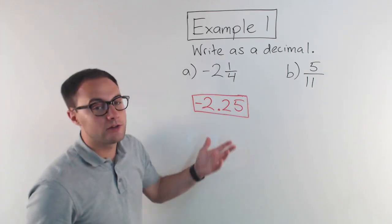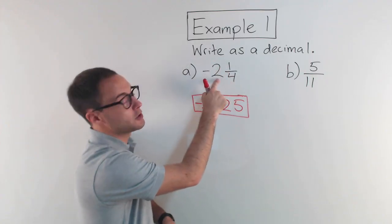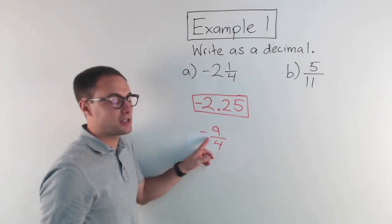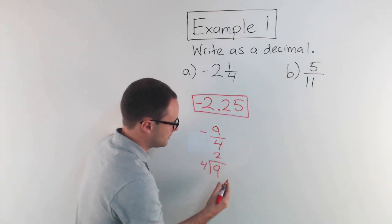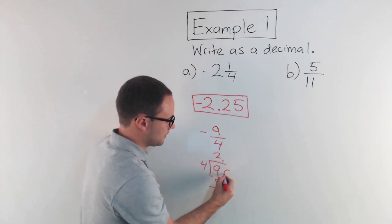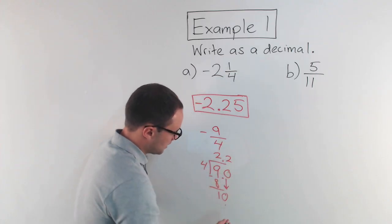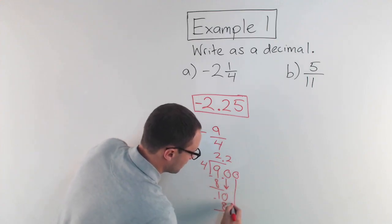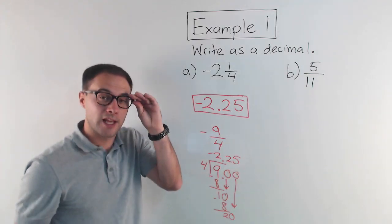Another way to do it: convert to an improper fraction. Four times two is eight, plus one is nine — negative nine over four. This just means division, so nine divided by four. Four goes into nine twice — that's eight, subtract, get one. Add a decimal point and a zero: four into ten is two, that's eight, subtract, get two. Bring another zero down: four into twenty is five. And remember it was negative, so negative 2.25. We get the same exact thing.